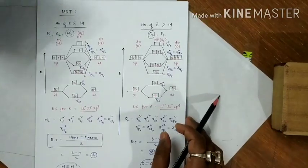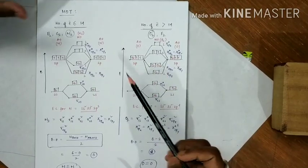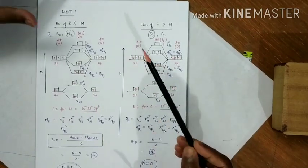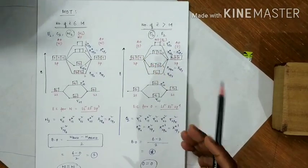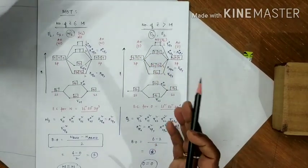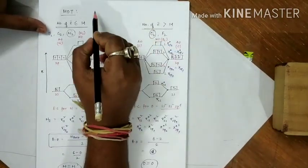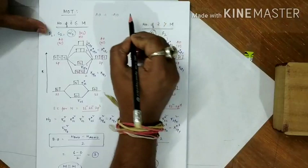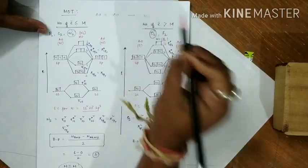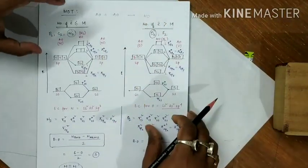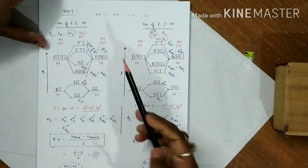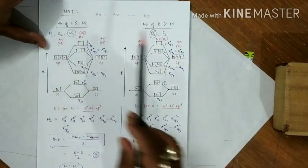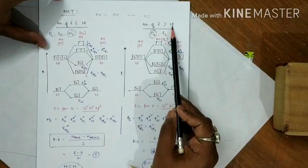Molecular orbital theory describes what happens when a molecule is formed — the atomic orbitals combine to give us a new set of orbitals. The molecular orbital diagram can be drawn in two ways: one for total number of electrons less than or equal to 14, and the other for total number of electrons greater than 14.